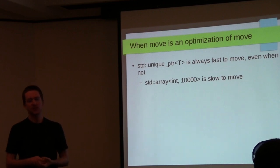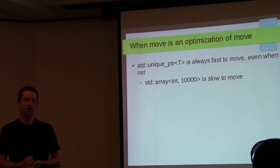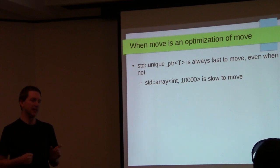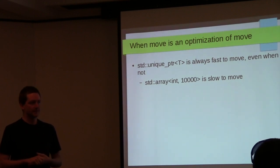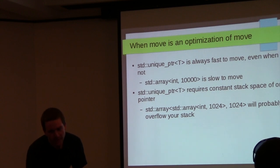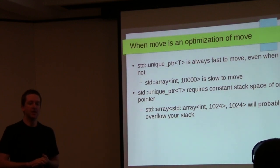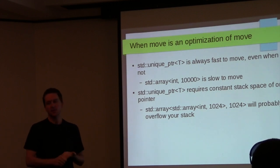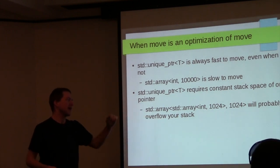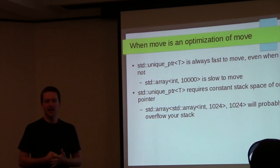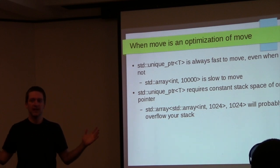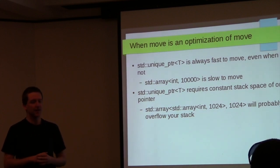A class with 150 bytes of ints and a vector: move is better than copy but still pretty expensive. Also, if you have a nested array like array<array<int, 1024>, 1024> — that's four megabytes — it'll probably overflow your stack. unique_ptr is only eight bytes. You don't have to worry about running out of stack space with unique_ptr, whereas large stack-allocated arrays can overflow the stack on many compilers.